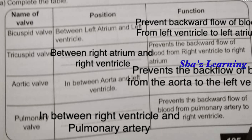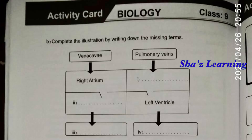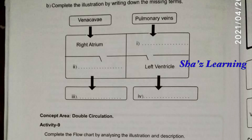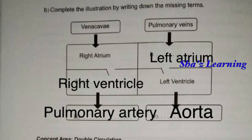Bicuspid valve function: prevents backward flow of blood from left ventricle to left atrium. Aortic valve prevents the backflow between the aorta and the left ventricle. Pulmonary valve is positioned between the right ventricle and pulmonary artery. You will study this table by heart and the diagrammatic representation. Complete the illustration by writing down the missing terms: right atrium, right ventricle, left atrium, left ventricle, and pulmonary veins.